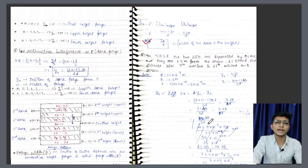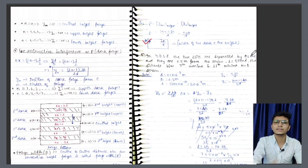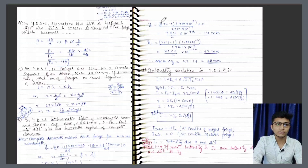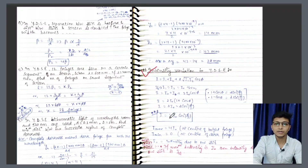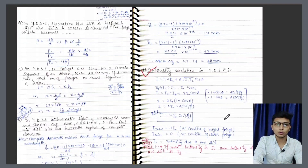Iske baad kuch questions aayenge. Kuch jagah thoda kata hua milega kyunki hamen class mein direct solve karne hote the, to revision bhi bahut achha nahi hua hoga. Alag-alag phase difference par hum yahan par intensity nikal sakte hain, lekin jo maximum intensity four I naught hota hai — yeh kaise aata hai — aage iska concept samjhenge. Aur minimum hota hai zero.